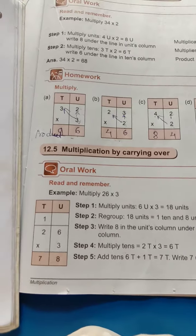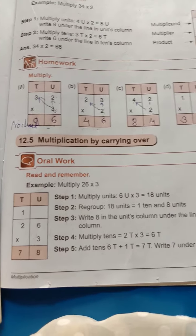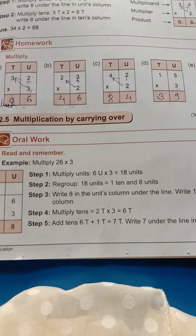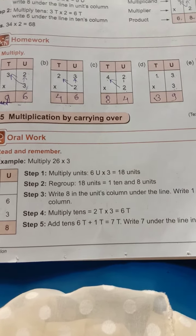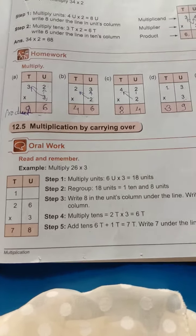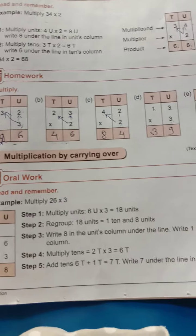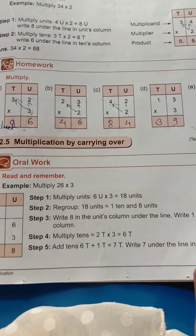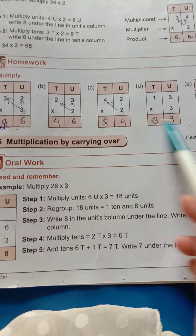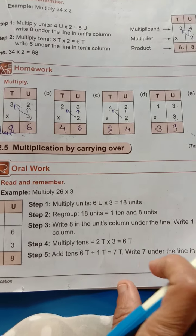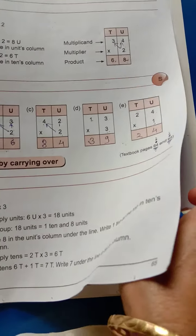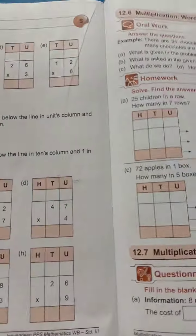Now we are going to learn how to solve multiplication by carrying over. Simple multiplication was easy. Now if there is carrying over, how do you solve it? This is carrying over multiplication. For example, this one: 17 multiply 5.